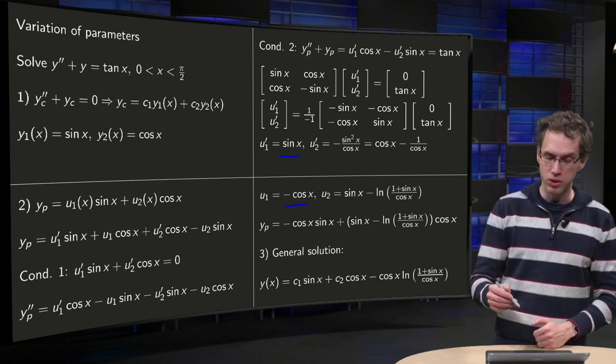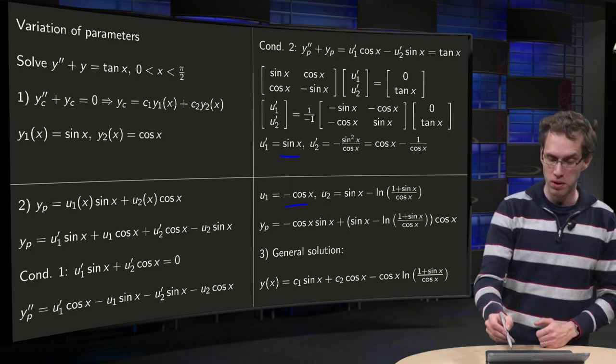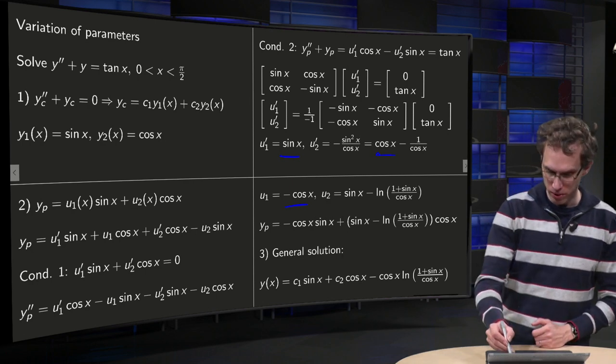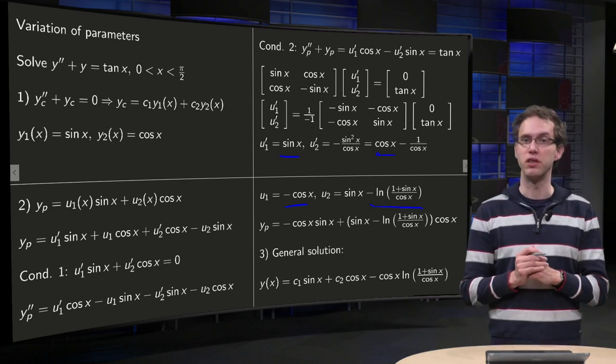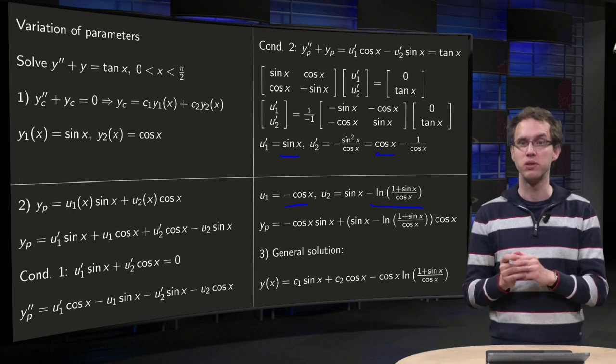And then you also integrate the equation for u₂' with respect to x. So you get u₂, this equals cos(x). And the other integral is not so trivial. We just leave it for a moment and come back to it on the last slide.